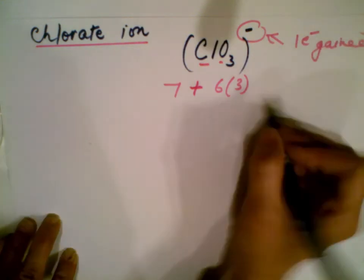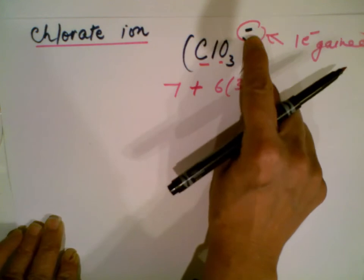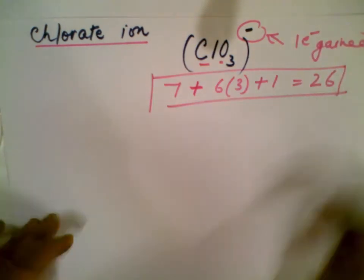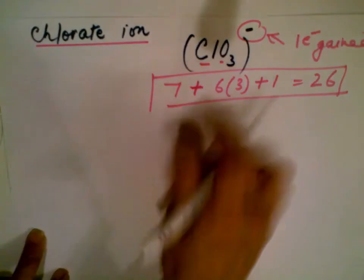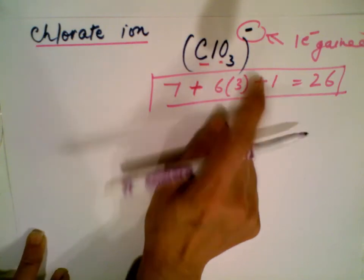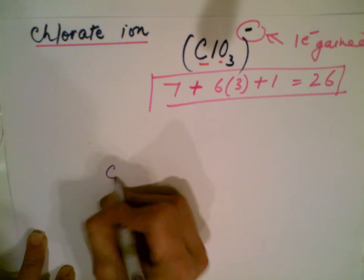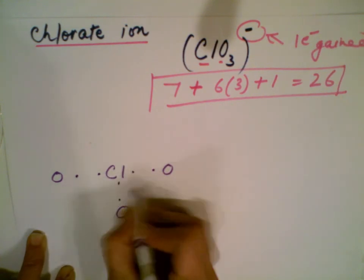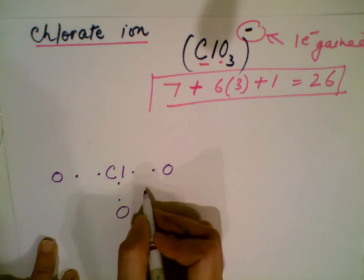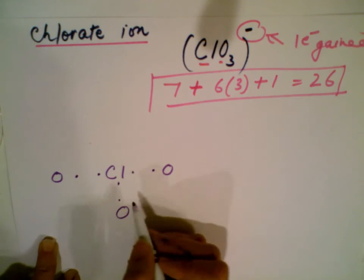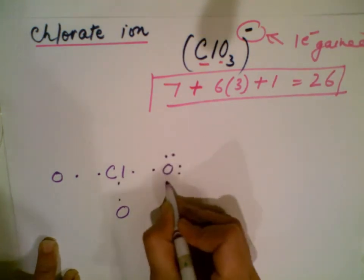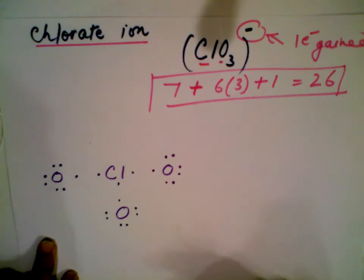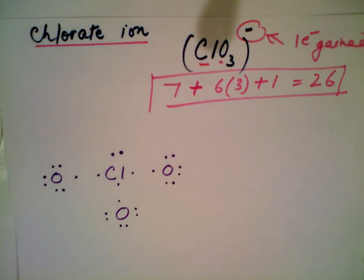The negative one charge means one electron is gained, so you add one electron. The total adds up to 26 electrons. We distribute these 26 electrons among four atoms — one chlorine and three oxygens. We put two electrons between each pair of atoms to ensure at least a single bond, using six electrons for bonds, leaving twenty more to distribute as lone pairs around the atoms.